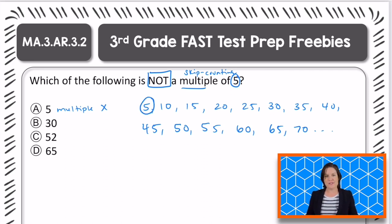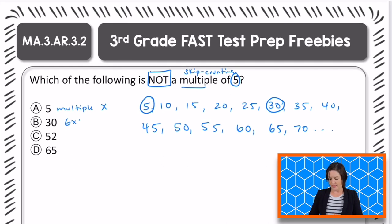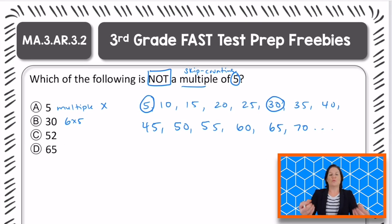What about 30? Is 30 a multiple of five? Yeah, it's located right here, right? Six times five is 30. That makes it a multiple of five. So should we keep this one or eliminate it? We need to eliminate it because it is a multiple.